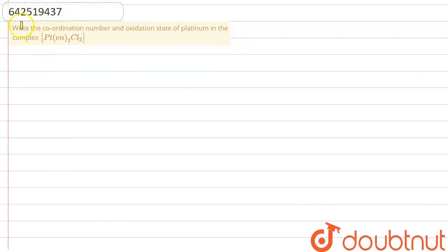Hello everyone, this is our question. Let me explain it to you. Write the coordination number and oxidation state of platinum in the given complex.